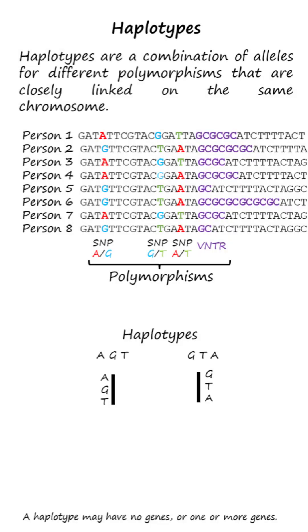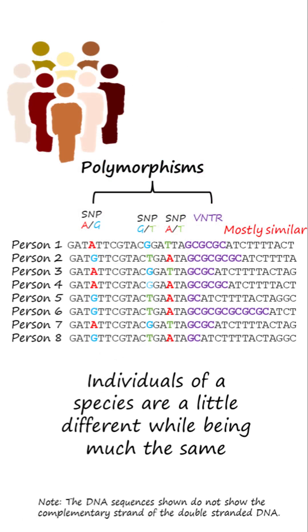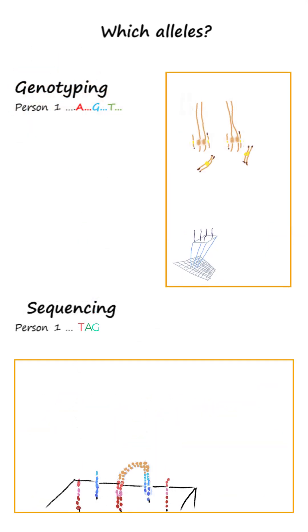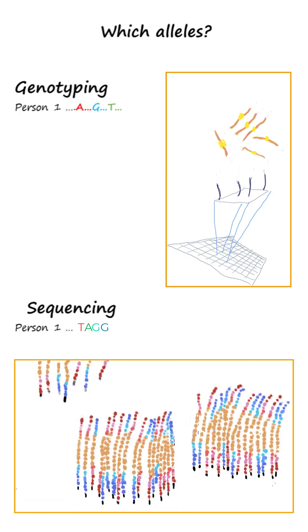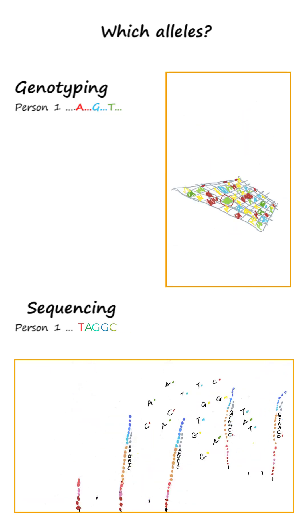Haplotypes are a combination of alleles for polymorphisms closely linked on the same chromosome. Polymorphisms are the variations in DNA sequence among individuals, found in a mostly similar chromosomal DNA sequence. Genotyping or sequencing can determine an individual's alleles for known polymorphisms.